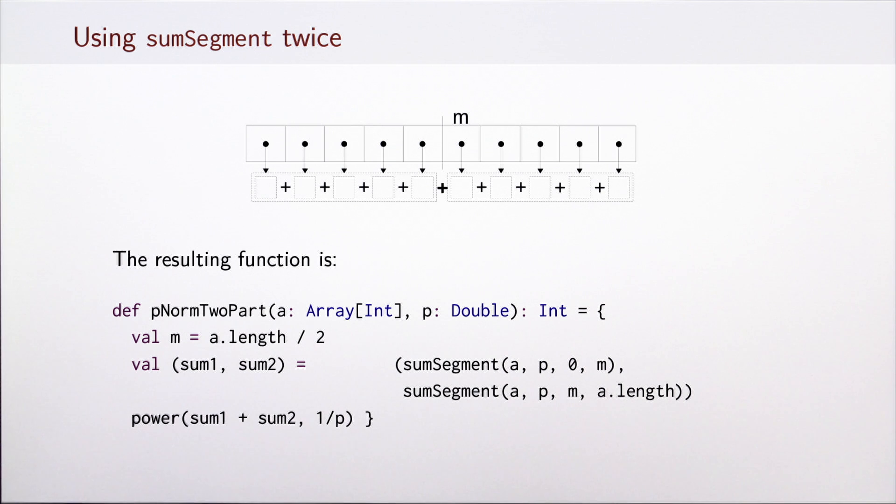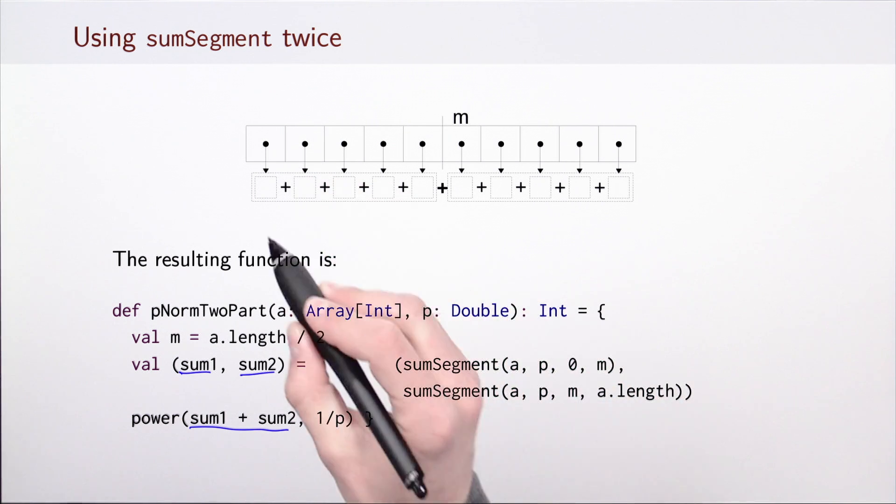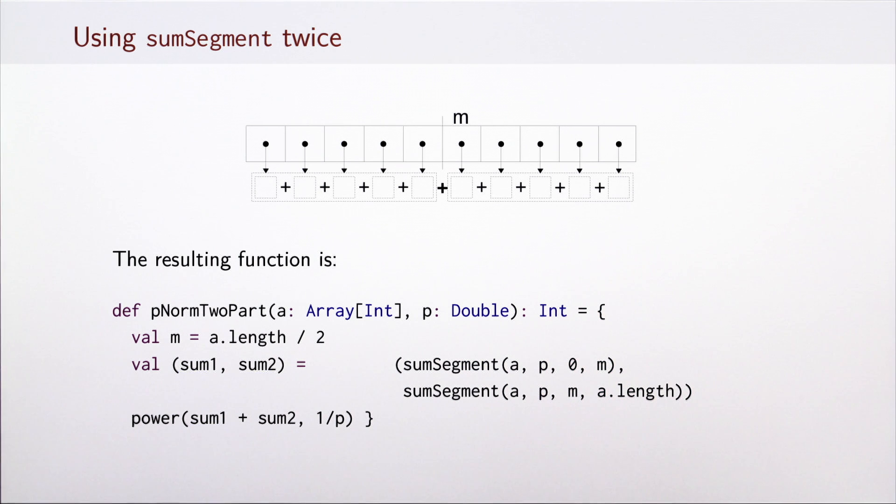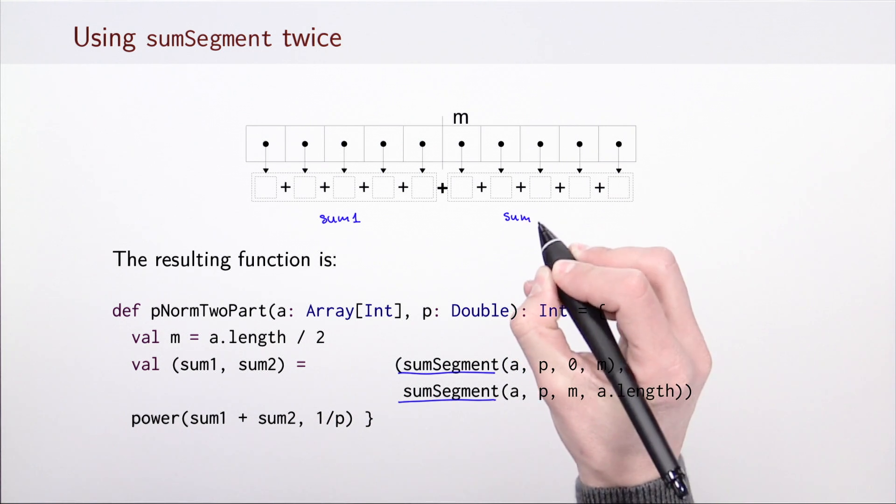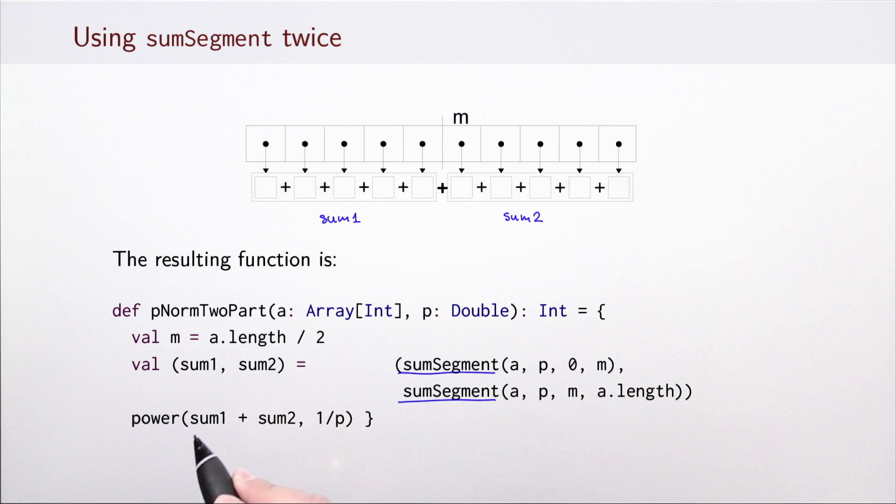How would we implement this version? We can just reuse the sum-segment function and invoke it twice to obtain two intermediate sums, which, when we add up, we obtain the same value that we can then raise to the power 1 over p. So we have grouped this sum into two components. The function that corresponds to these two separate sums simply invokes sum-segment twice. It computes a pair of values, sum-1 corresponding to the first part of the array, and sum-2 corresponding to the second part. Once we have these two sums, we simply add them up and raise the result to power 1 over p. This is still a sequential version.